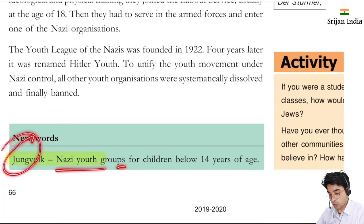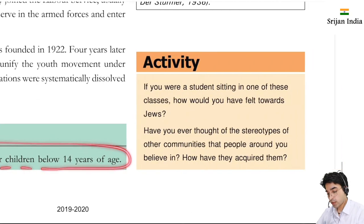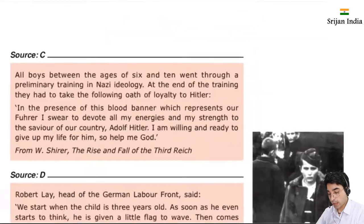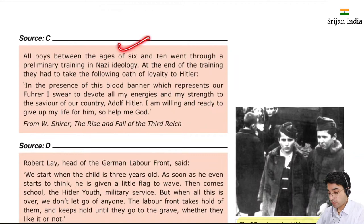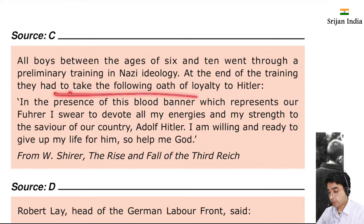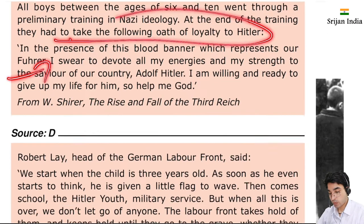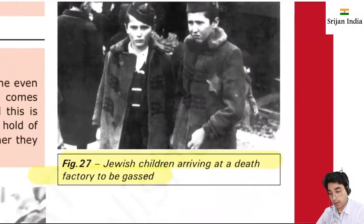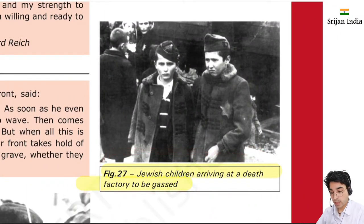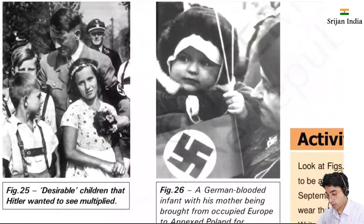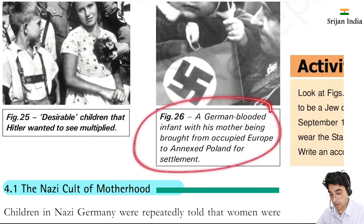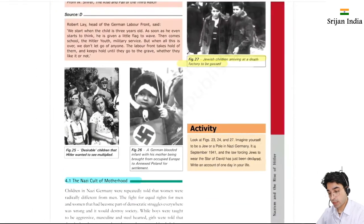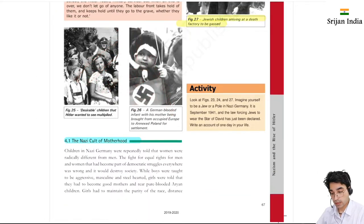Jung Folk was the Nazi youth group of children below 14 years of age. All boys between the age of 6 and 10 went through preliminary training in Nazi ideology. At the end of the training they had to take an oath. Then Jewish children arriving at a death factory to be gassed - again inhuman. Desirable children that Hitler wanted to see multiplied, and here a German-blooded infant with his mother. So again this entire Nazi propaganda was ongoing.